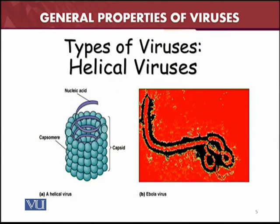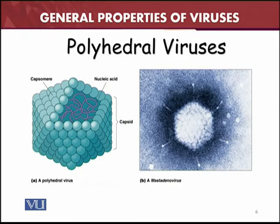Looking at some examples with diagrams: on the left side is a helical virus — for example, the Ebola virus — showing the nucleic acid and the capsid, which is made up of capsomeres. On the other side is the electron microscope image of the same Ebola virus.